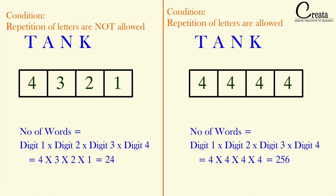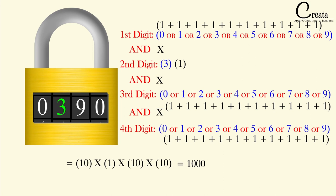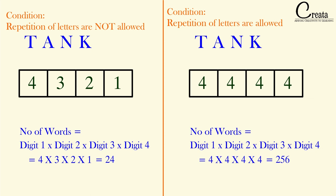Are you able to correlate this fundamental with the number lock question where we used 4 digits? There also, the repetition of numbers is allowed. In the first slot, we choose a number from 0 to 9, and in the third and fourth slots also, repetition is allowed — we can choose any number from 0 to 9. The question will not always specify whether repetition is allowed or not — you have to use your common sense. In the number system, you can repeat numbers since all 4 slots vary from 0 to 9. But in words like TANK, repetition can be allowed or not allowed depending on the question.